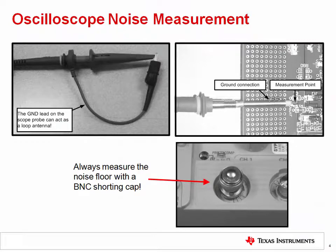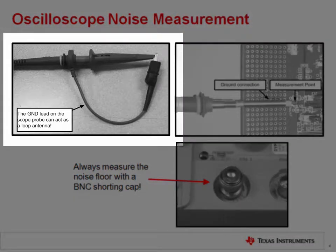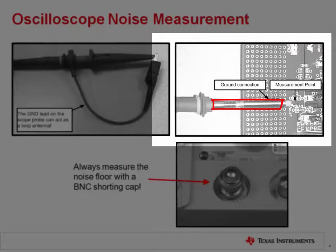This slide shows a few additional tips to help improve the performance of your scope measurements. First, you should avoid using the scope probe's ground lead — it can act as a loop antenna and receive extrinsic noise, giving you errors in your measurements. If possible, remove the scope probe cap and use a direct ground connection, as shown on the top right. Note that the internal shaft on the scope probe is connected to ground.